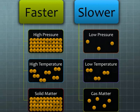The higher the pressure, the faster the velocity and temperature and solid. And the slow is low pressure, low temperature and gas matter.